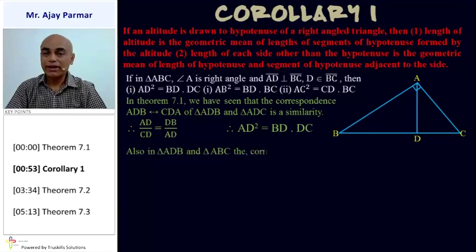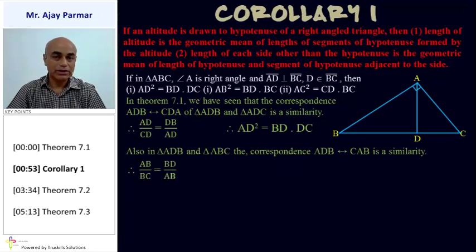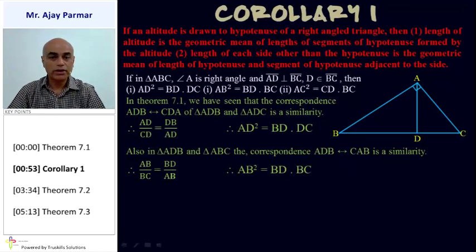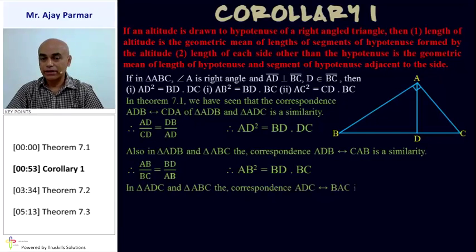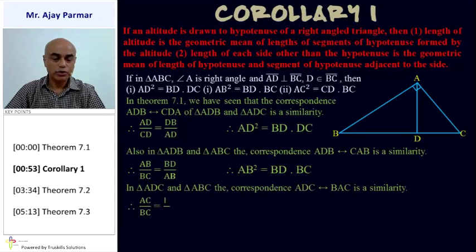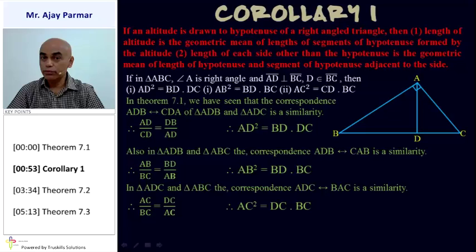Similarly, for triangles ADB and ABC, triangle ADB corresponds to triangle CAB is a similarity. Writing down the ratio: AB/BC = BD/AB. Taking cross multiplication, AB² = BD × BC. For the last result, for triangles ADC and ABC, triangle ADC corresponds to triangle ABC is a similarity. Writing down the ratio: AC/BC = DC/AC, and cross multiplication gives AC² = DC × BC.